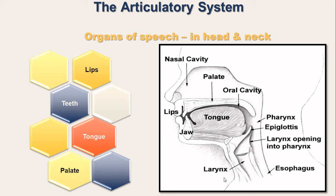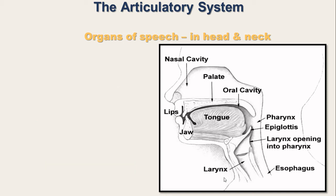We have three cavities in our head. One is the nasal cavity for air to move through the nasal path. Then we have the oral cavity, which is inside the mouth and which contains the roof of the mouth and the tongue. Next we have the pharynx and the larynx.